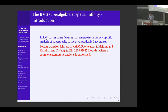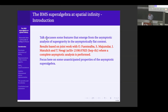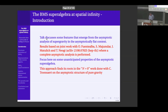A more complete analysis can be found in the paper, and I refer to that paper for more details. I want to focus on one specific property of this asymptotic superalgebra that we found: we get a nonlinear algebra at infinity — an infinite dimensional nonlinear extension of the BMS algebra.